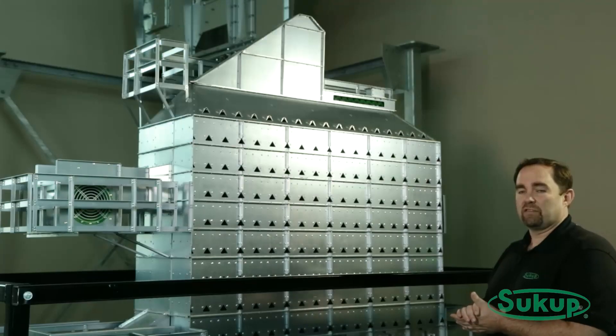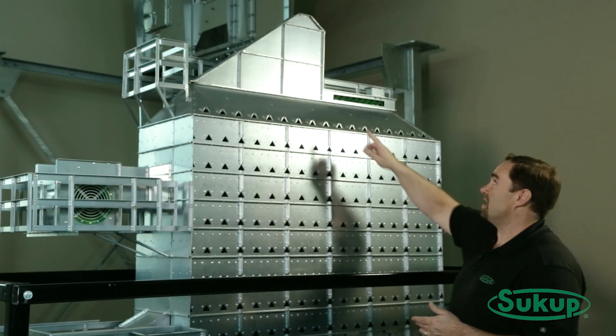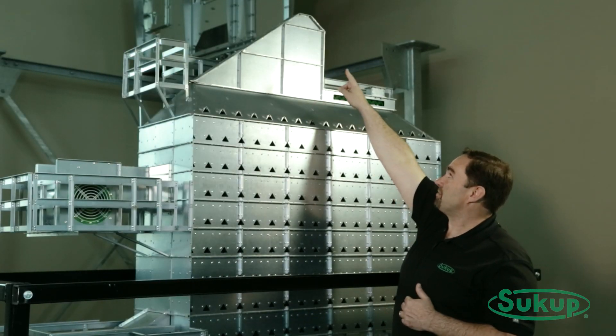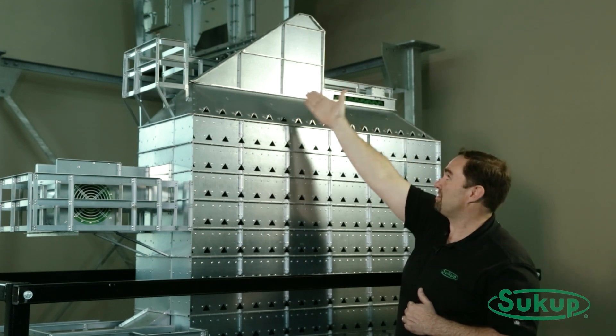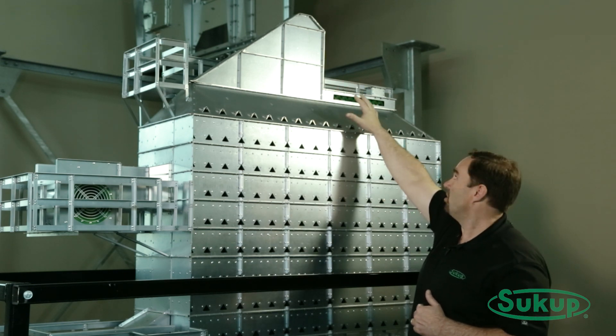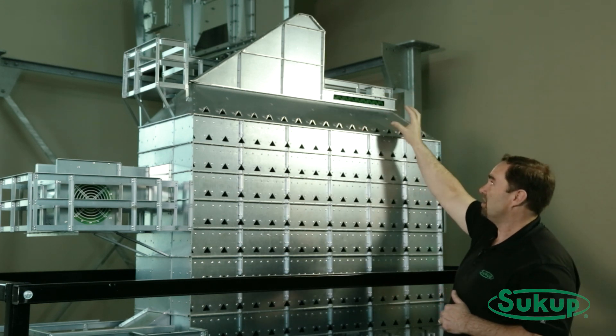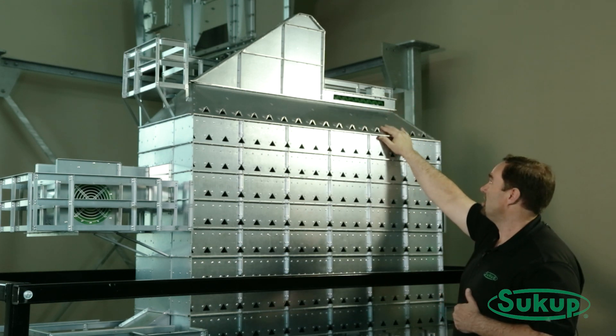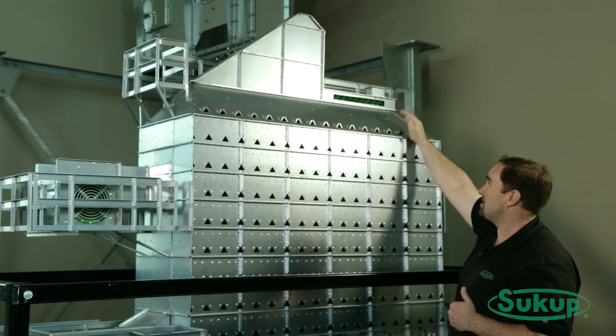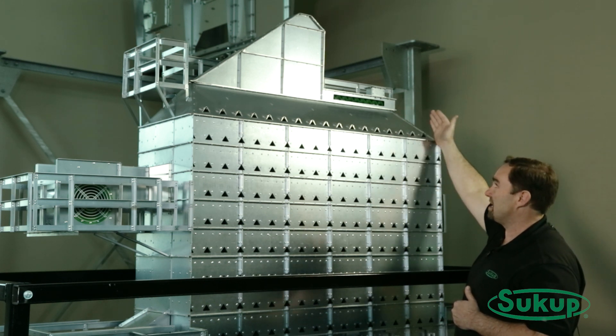Let's start at the top. On the fill side, we have two different options: a gravity fill system, where the grain is filled to the center of the dryer and is simply fed down by gravity to each side, or an auger fill system, where you fill the dryer either in the back or the front. It has a little bit lower fill height and is more located towards the end of the dryer.